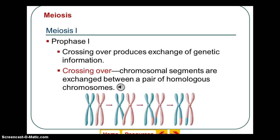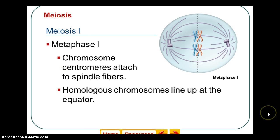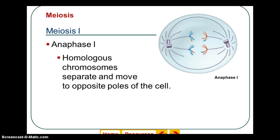During prophase 1, a phenomenon called crossing over occurs. During crossing over, there is an exchange of genetic material between a pink chromosome from the mother and a blue chromosome from the father. These are homologous chromosomes, meaning the DNA is generally the same but with slight differences. Crossing over is one of the ways meiosis allows for variation. In metaphase 1, chromosomes line up along the middle and spindle fibers attach to centromeres. In anaphase 1, they are pulled apart.